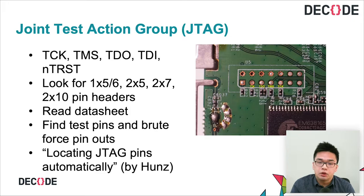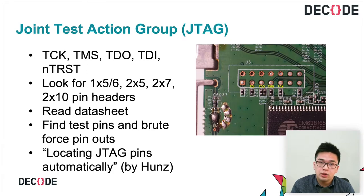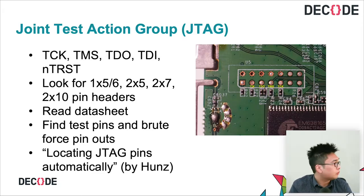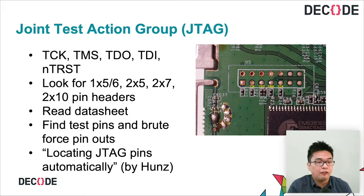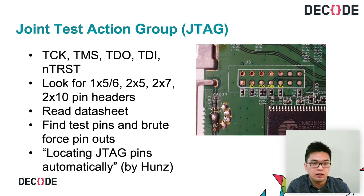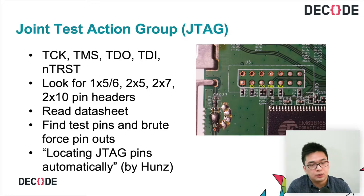JTAG also provides a debugging interface that allows the testing device to read and write to RAM and registers and set breakpoints on the CPU. To use this protocol we need five pins: TCK, TMS, TDO, TDI, and TRST — which stand for Test Clock, Test Mode Select, Test Data Out, Test Data In, and not-Test Reset. This protocol is a synchronous serial interface, which is why we have a clock signal.